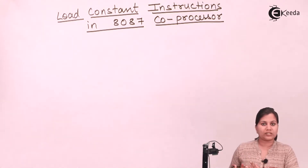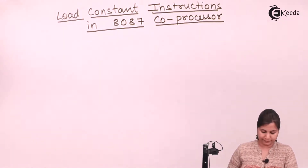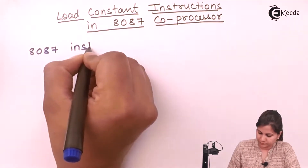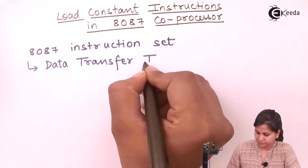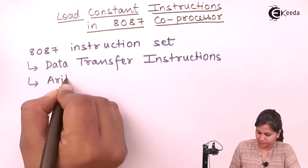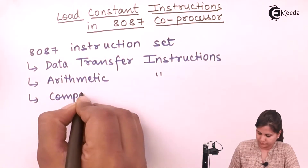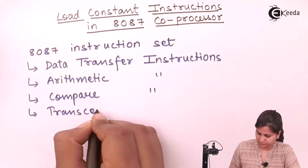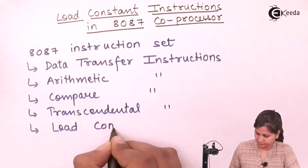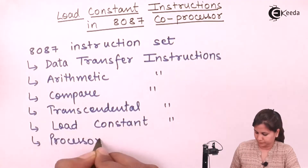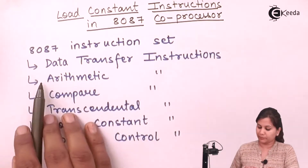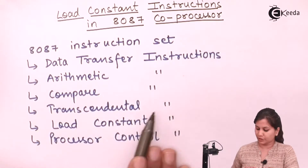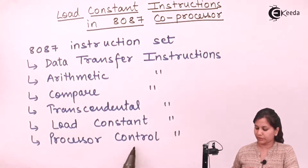The instruction set of the 8087 is classified into different categories depending upon the type of operation or function performed by the instructions. The 8087 instruction set is classified into six categories. The six categories are: data transfer instructions, arithmetic instructions, compare instructions, transcendental instructions, load constant instructions, and processor control instructions.